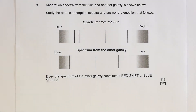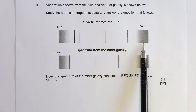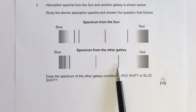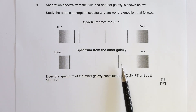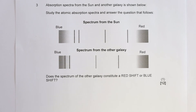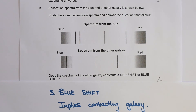Now the third question. Absorption spectra from the Sun and another galaxy are shown. The spectrum from the Sun shows certain lines; the spectrum from the other galaxy has lines shifted more towards the left — towards the blue side. This is called a blueshift. The question asks whether the spectrum of the other galaxy shows a redshift or a blueshift. The answer is blueshift. A blueshift implies a contracting galaxy, meaning the bodies in the galaxy are moving towards each other, and a higher frequency will be perceived.